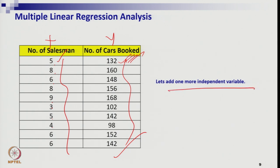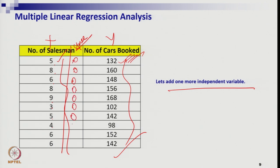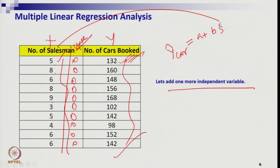Now suppose I would like to add one more independent variable to illustrate the concept of multiple regression. We are adding another independent variable: space — specifically the floor size of the exhibition. The idea is that the floor space of the exhibition may also matter for the number of cars booked. So we add the space data into our Excel sheet.